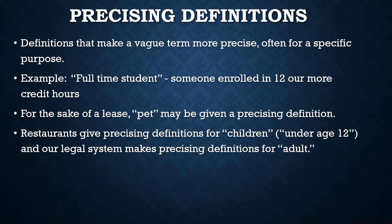Restaurants give precising definitions for 'children' — children who are under age 12 eat free. Our legal system does this with 'adult': for some purposes, an adult is age 18; for other purposes, age 19; for still others, adult may be age 21 — it depends on the circumstances and what precising definition is applicable.